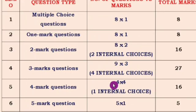The last type is the 5-mark question. There is no internal choice here — you just have to answer it. There is only 1 question, but it may have sub-questions A and B. Together it carries only 5 marks. So altogether you will get 80 marks from 38 questions. This is the pattern.